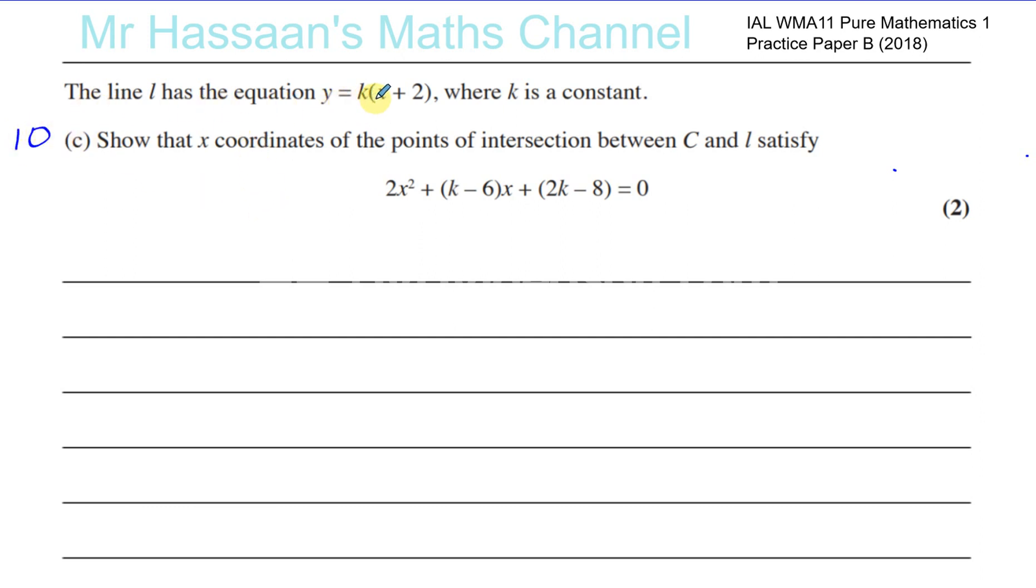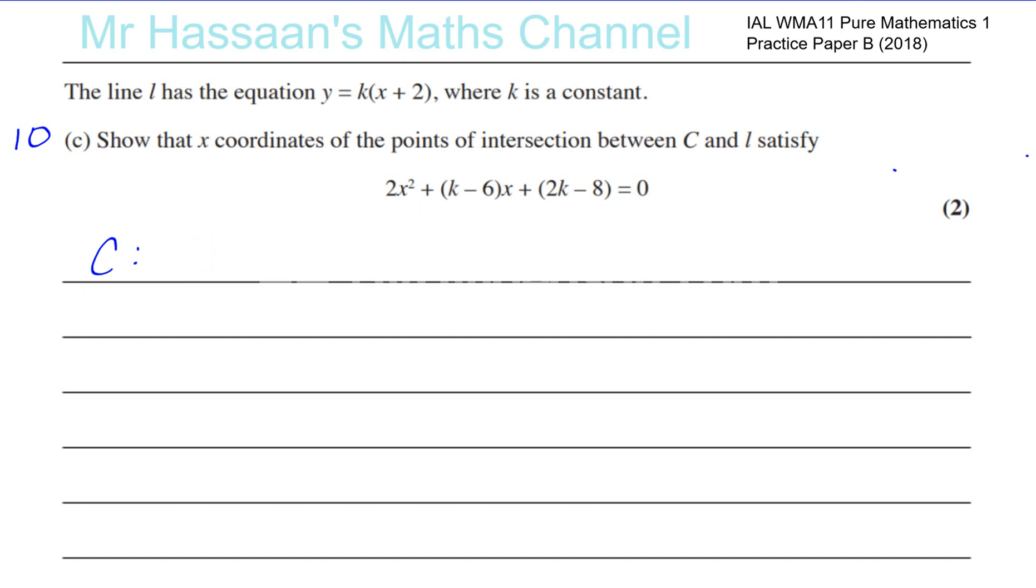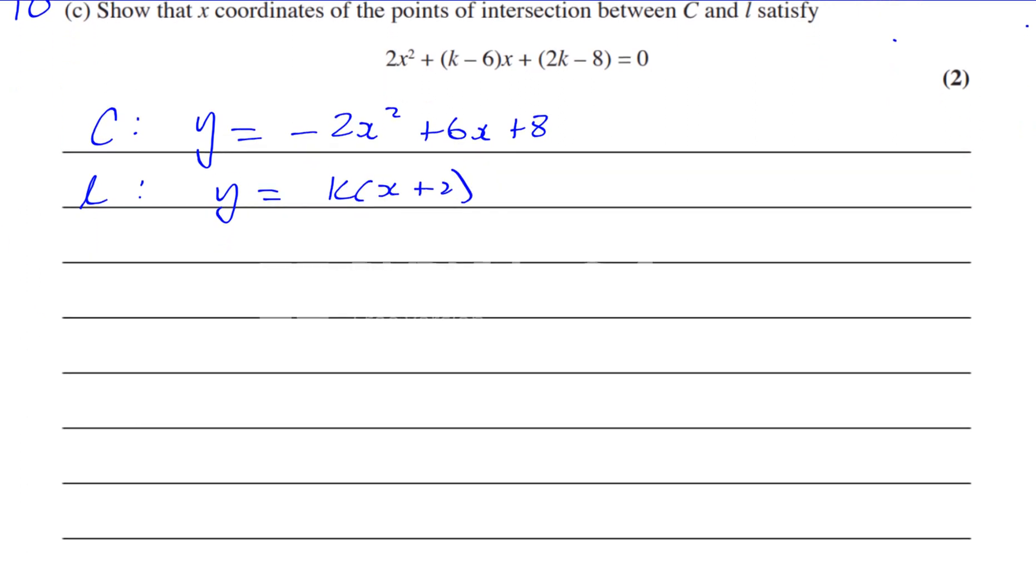It says a line L has equation y equals k times x plus 2, where k is a constant. Show that the x coordinates of the points of intersection between C and L satisfy these equations. So let's remind ourselves, the curve C had equation y equals minus 2x squared plus 6x plus 8. That was the equation of the curve C.